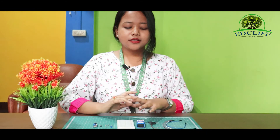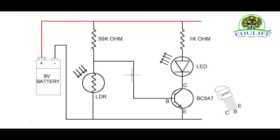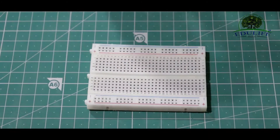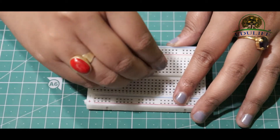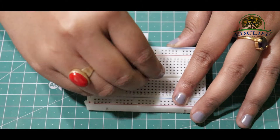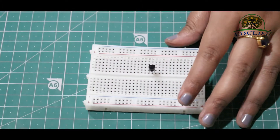Now the components are ready for connection. There is a connection to the circuit diagram. There is a transistor, and the transistor is placed vertically. Now there is the transistor collector.